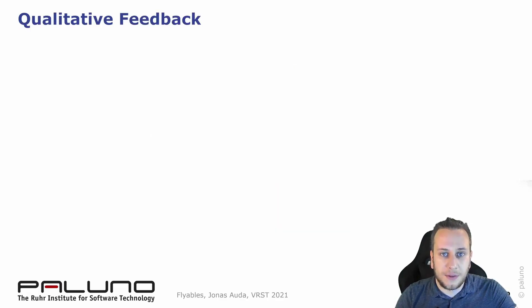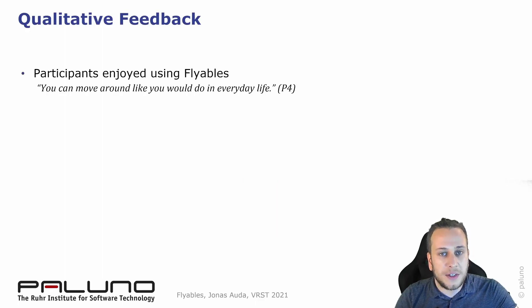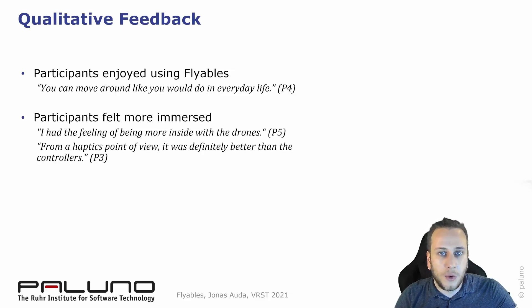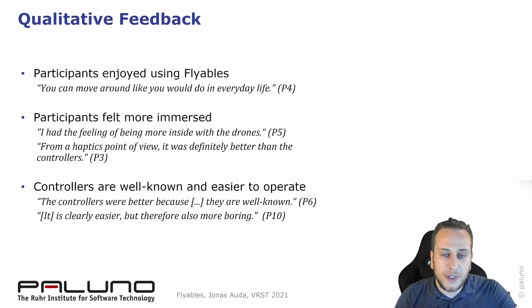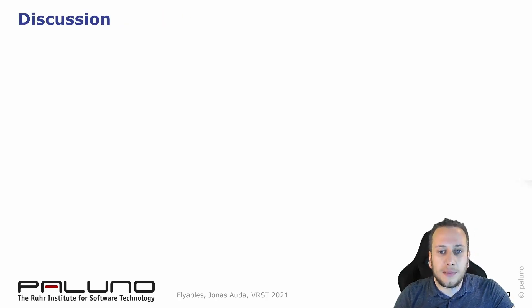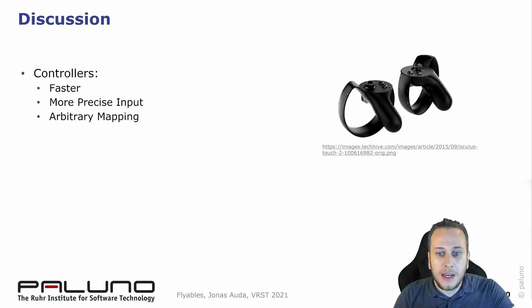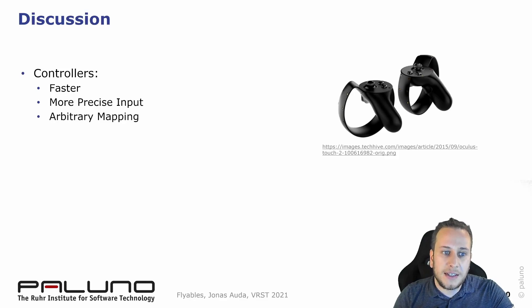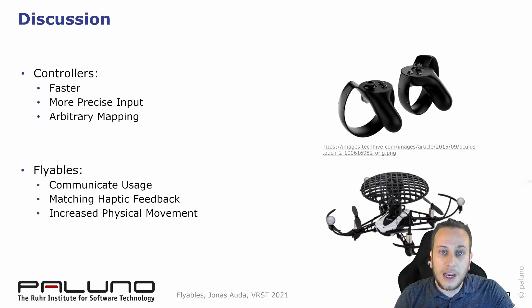We also gathered qualitative feedback. Our participants enjoyed using Flyables — one participant appreciated that one can move around like in everyday life. Participants stated that they felt more immersed while using Flyables, especially from a haptics point of view. However, participants also stated that controllers are well known to them and therefore easier to use. When comparing Flyables to state-of-the-art controllers, participants solved tasks faster and more precisely with controllers, but the mapping of actions to buttons is arbitrary. In contrast, Flyables communicate their usage and provide matching haptic feedback, while also increasing physical movement.